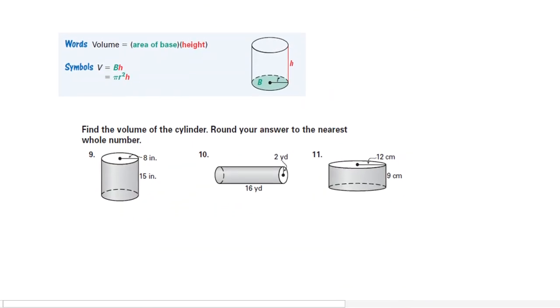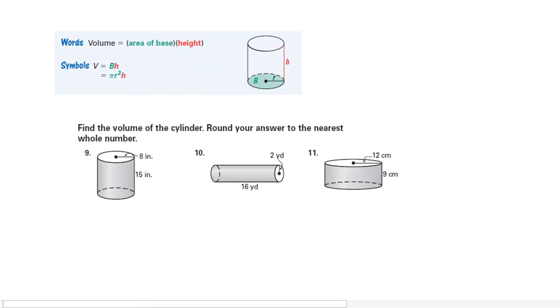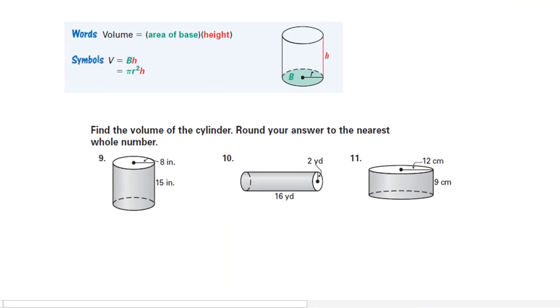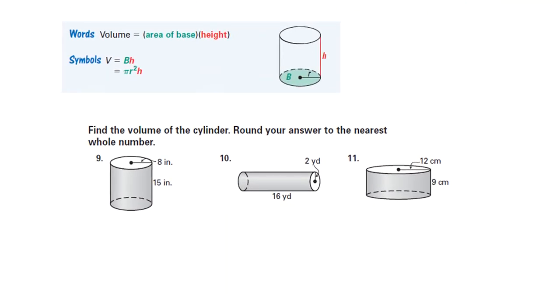So again, the formula for the volume of a cylinder is the same: area of the base times the height. So we'll just do one of these. So we're going to say that volume equals, and the base is a circle, so that's π times radius squared. There's the area of the base. And then we have to multiply that by the height of the cylinder, which is 15.